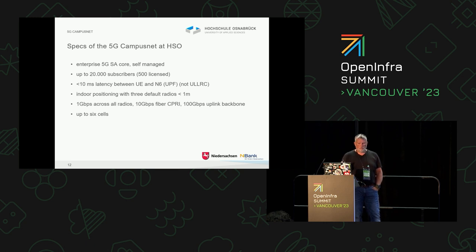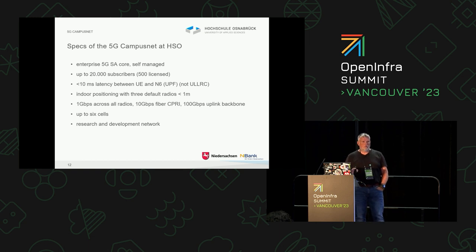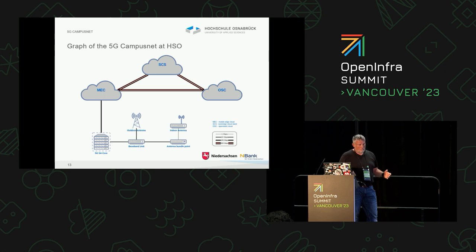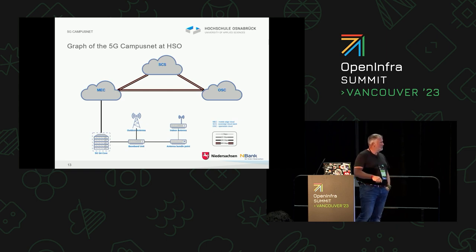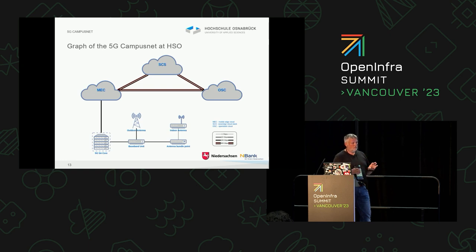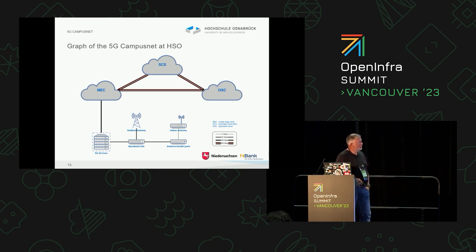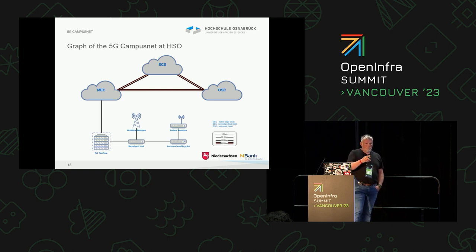The tenders are out or going out next week. Very important: this is a research and development network — we have no production operation behind it. We are not SpaceX — we are research and development. This is a simple graph of our network. On the right we have our OpenStack Cloud, the Sovereign CloudStack — we call it our Mobile Edge Cloud — with an attached 5G standalone core. From there, you have the base station unit with outdoor antennas — only two outdoor antennas with a power of 1 watt only — and an antenna bundle point for up to 16 indoor antennas. Connectivity is 1 gigabit, 10 gigabit, and 400 or 100 gigabit above, with multiple 400 gigabits between data centers and clouds.